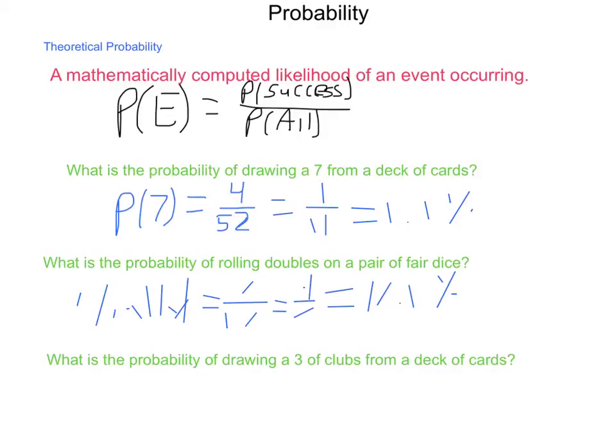What's the probability of drawing a 3 of clubs from a deck of cards? The probability of a 3 of clubs, well, there's only one of those in the entire deck. So it's 1 out of 52. Doing that division real quick to turn into a percentage, we get about 1.9% of the time. This is theoretical probability.